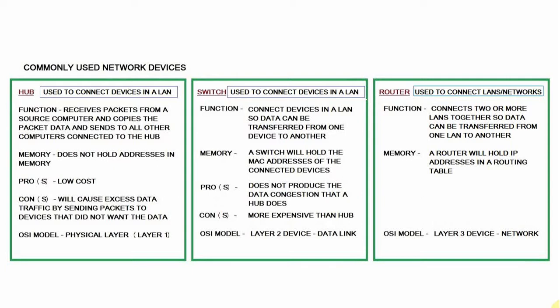In terms of memory, a router does have memory. It has the ability to hold IP addresses in what we call a routing table, and it uses those IP addresses as it functions. In terms of the OSI model, the router is a Layer 3 device — it works on the network layer.